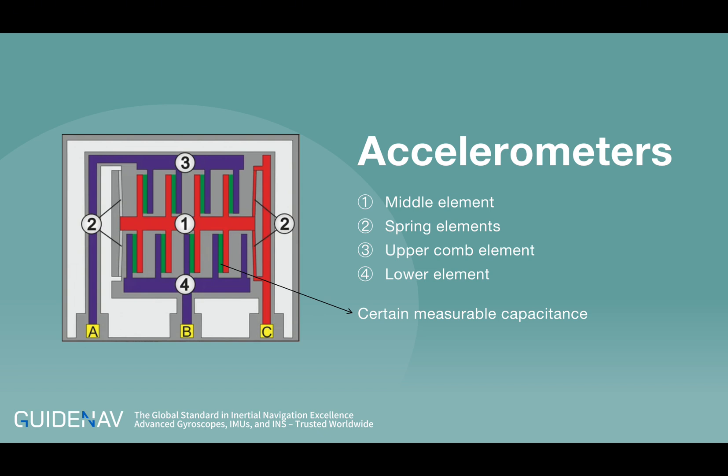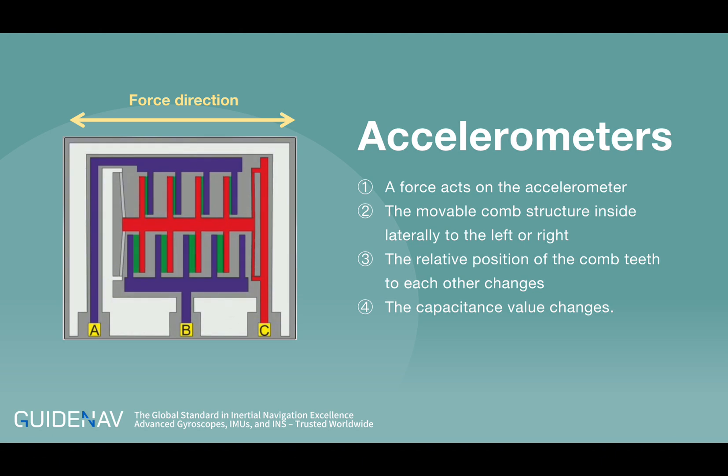The effective areas of the capacitors are shown in green in the sketch. Depending on the acceleration or deceleration, a force acts on the accelerometer, which deflects the movable comb structure inside laterally to the left or right. This changes the relative position of the comb teeth to each other.